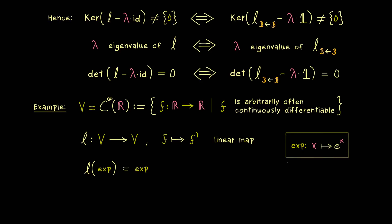And there a little bit of analysis knowledge tells you that the derivative is e to the power x again. Now this means this exponential function works as a vector here and namely it's an eigenvector with respect to the eigenvalue 1. So we immediately know that our linear map l has an eigenvalue given by 1.